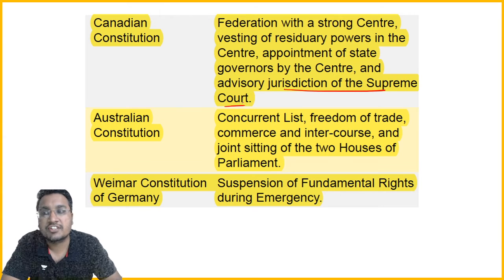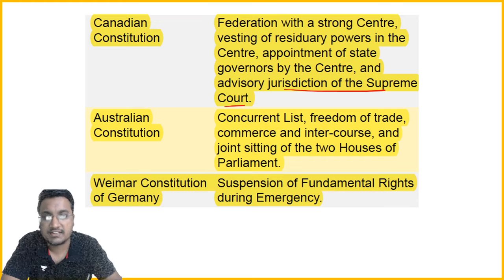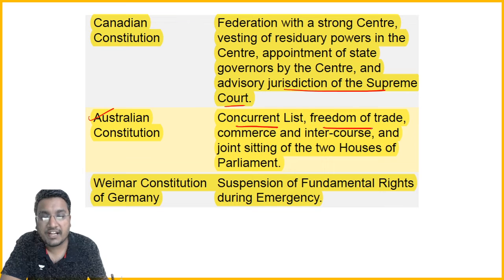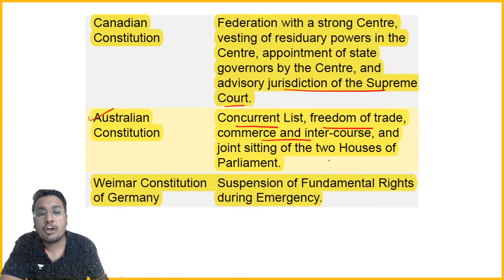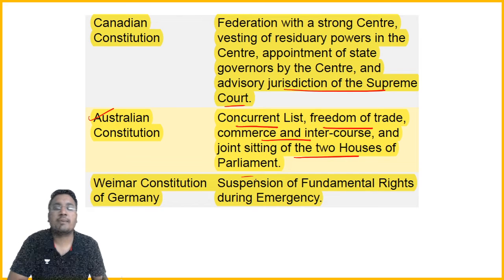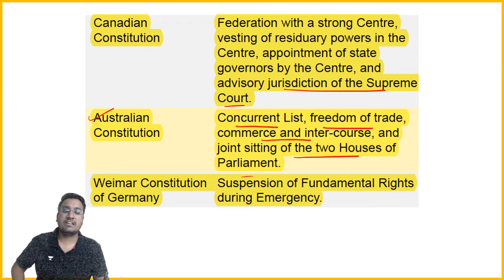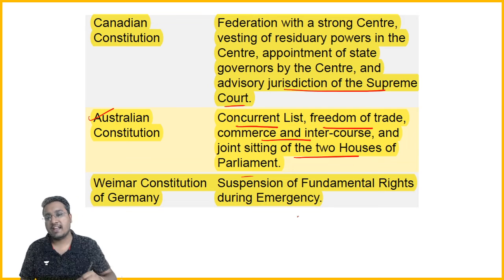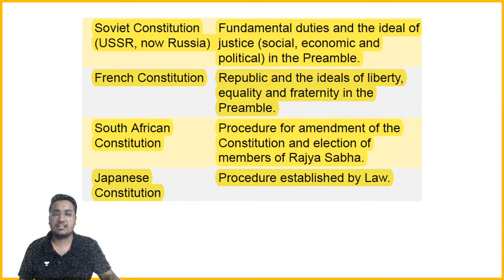From the Australian Constitution, we borrowed the concept of the Concurrent List, freedom of trade, commerce and intercourse, and the concept of joint sitting of the two houses of parliament. From the Weimar Constitution of Germany, we borrowed the suspension of fundamental rights during emergency.